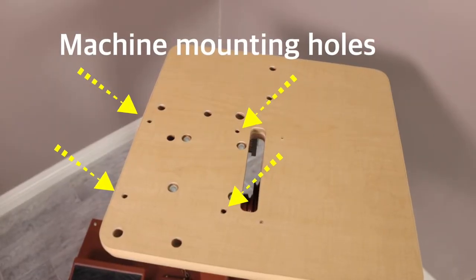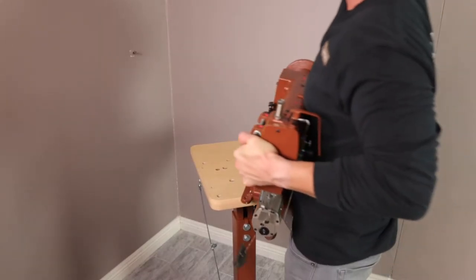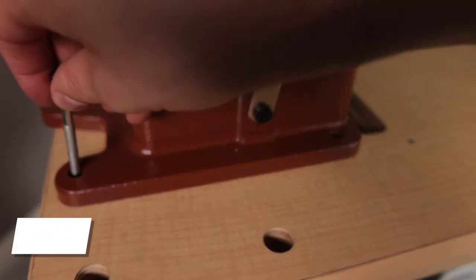These are the four holes you will mount the machine head to. The Class 26 weighs about 80 pounds, so please be careful when lifting as it can be oily and hard to grip.